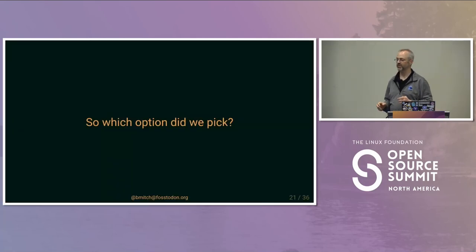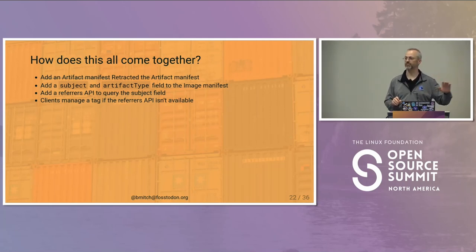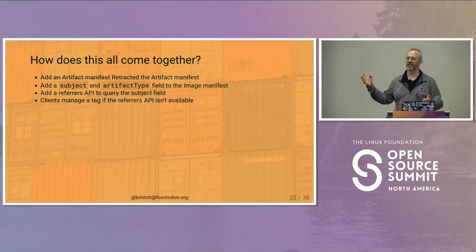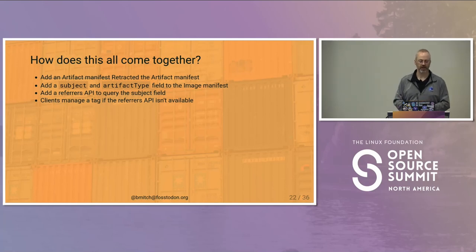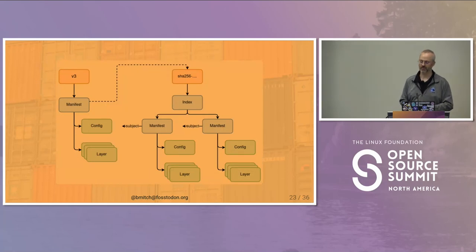Given all that, which option do we pick? Well, it was designed by committee, so we picked them all — at least initially. We said yes, and then came back and said we're going to defer that new artifact manifest and push that one off until later. We did go ahead and add the subject field to the image manifest, and we added another field called artifact type to the image manifest — content from that artifact manifest we thought would be useful. And we decided to make a refers API, but since not every registry today has it, we have a cool backup plan: just push a tag.